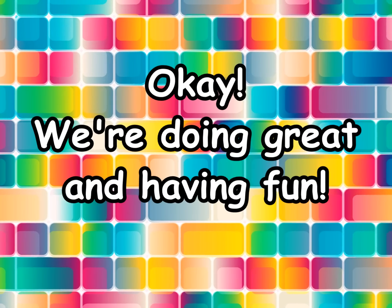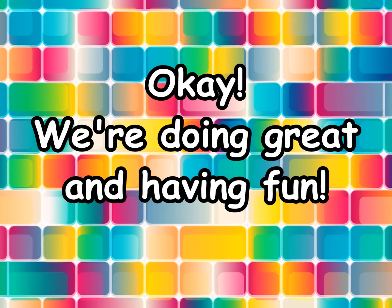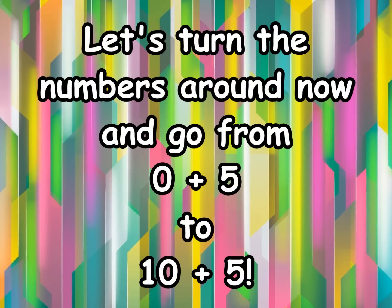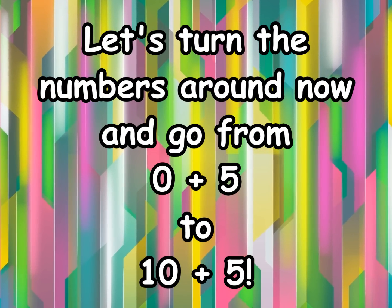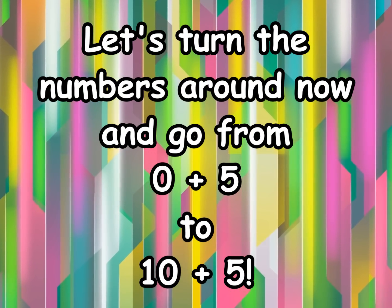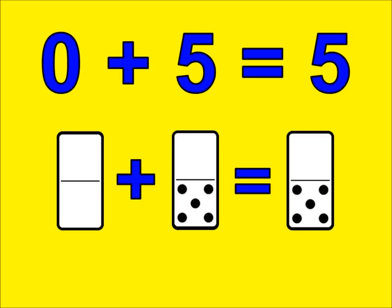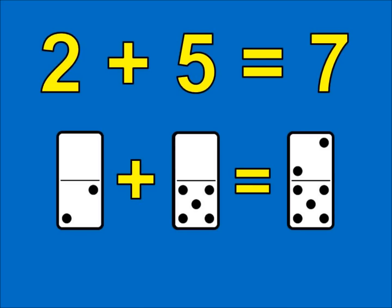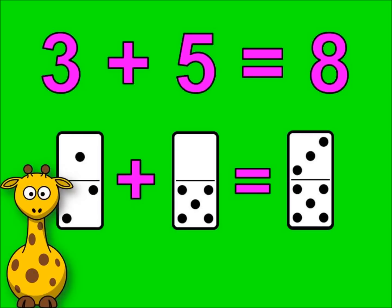Okay, we're doing great and having fun! Let's turn the numbers around now and go from 0 plus 5 to 10 plus 5. 0 plus 5 is 5. 1 plus 5 is 6. 2 plus 5 is 7. 3 plus 5 is 8.